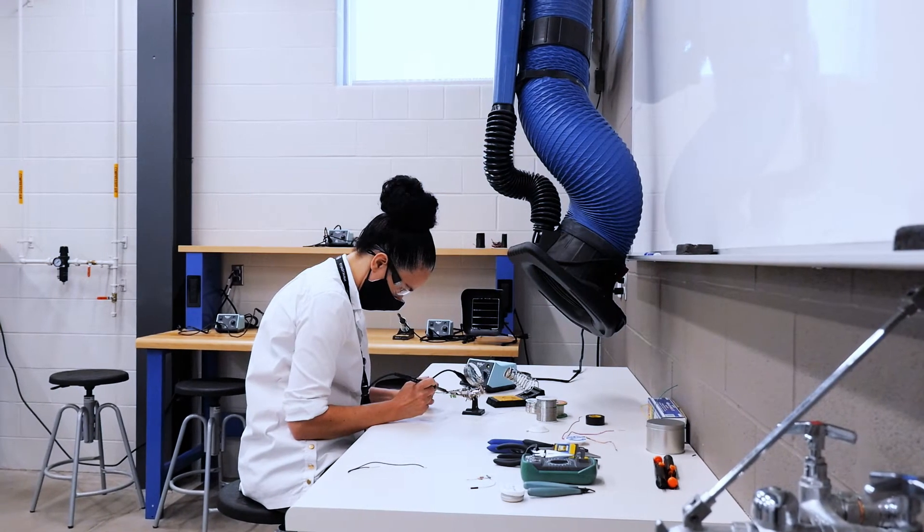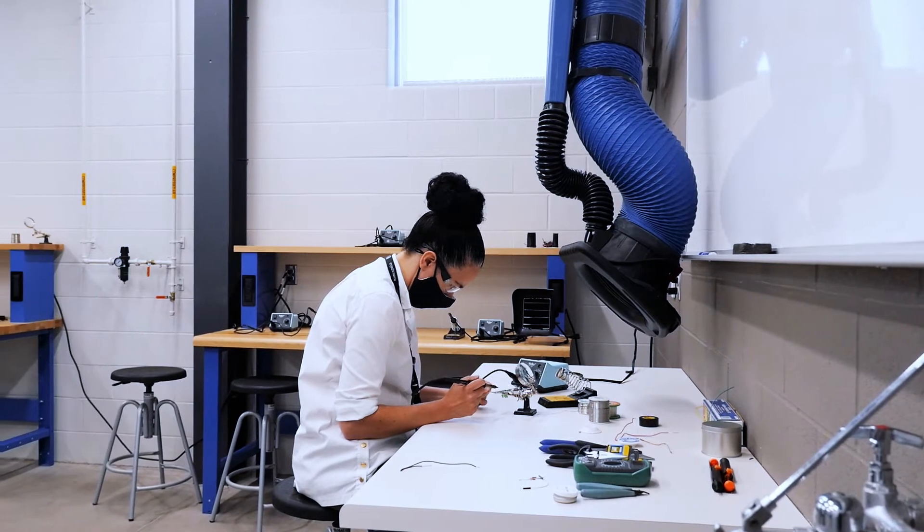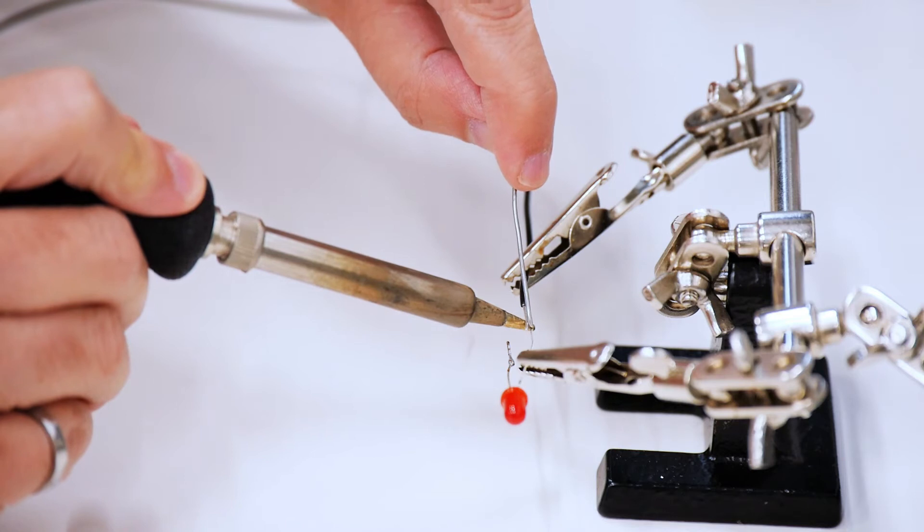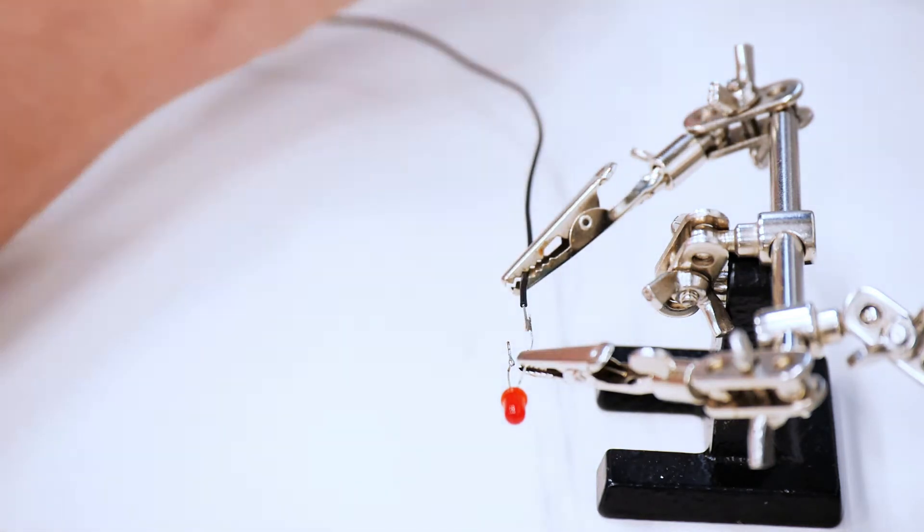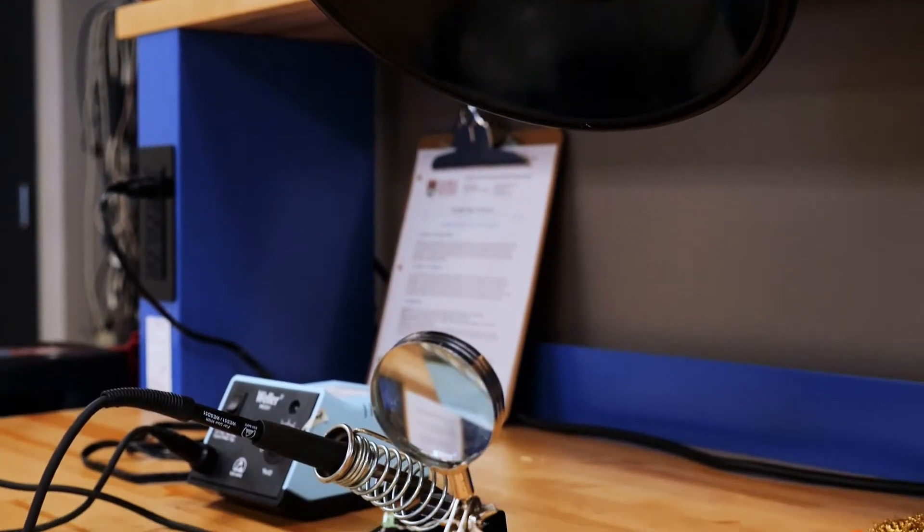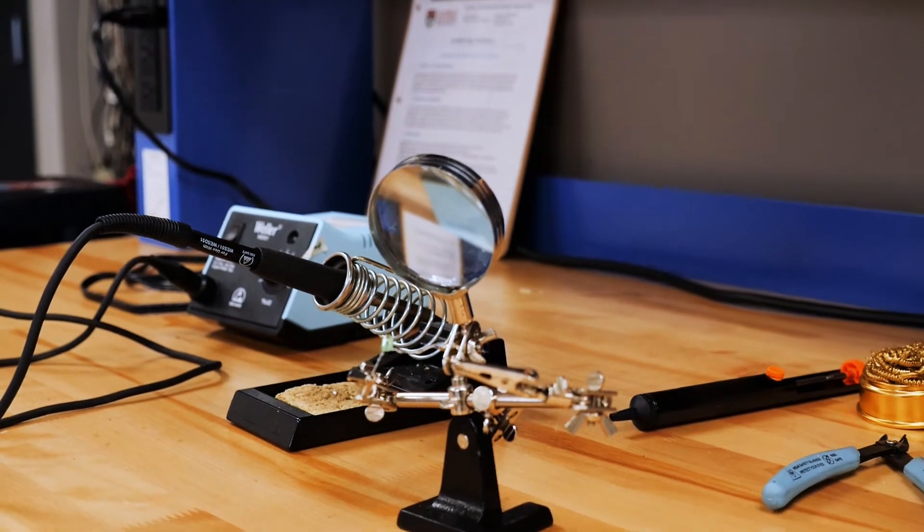The goal of soldering is to make a good electrical connection between two conducting components that won't be disturbed by motion or contaminants. The connection is made by using heat to melt solder to join two electrical components. In this video we will introduce the techniques and tools needed to safely produce good soldered connections.